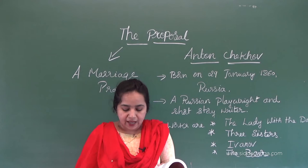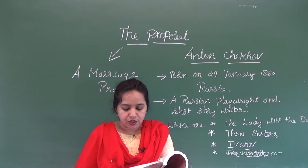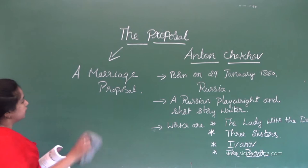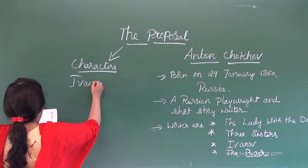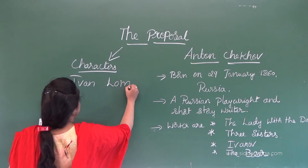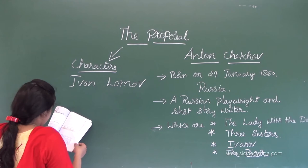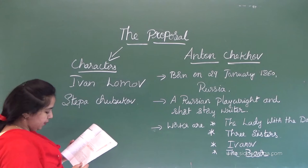Ivan Lomov, a long-time wealthy neighbor, comes to seek the hand of Stepan Chubukov — also wealthy — Chubukov's 25-year-old daughter. The characters are: Ivan Lomov, Stepan Chubukov, and Natalia. The names are a little strange because it is a Russian play. Ivan Lomov is a neighbor of Stepan Chubukov.